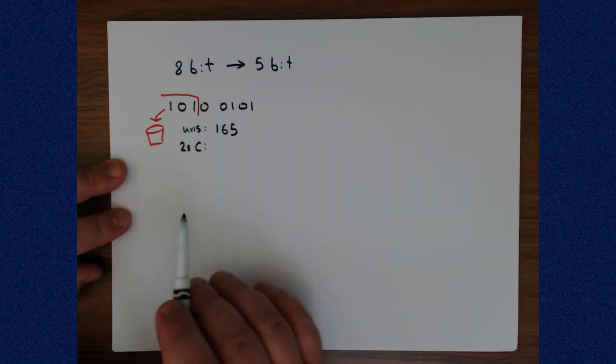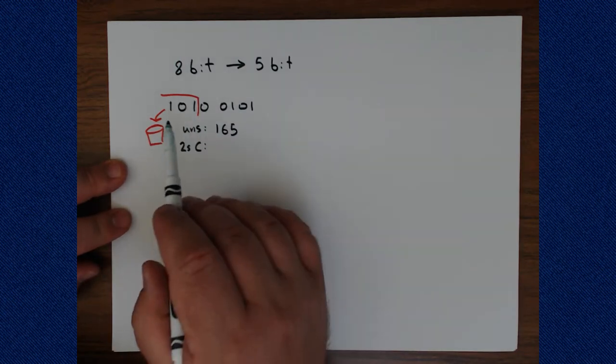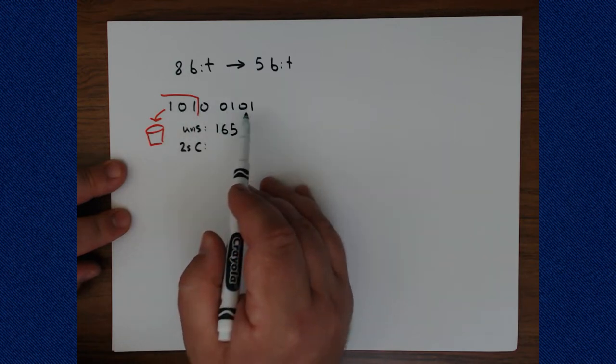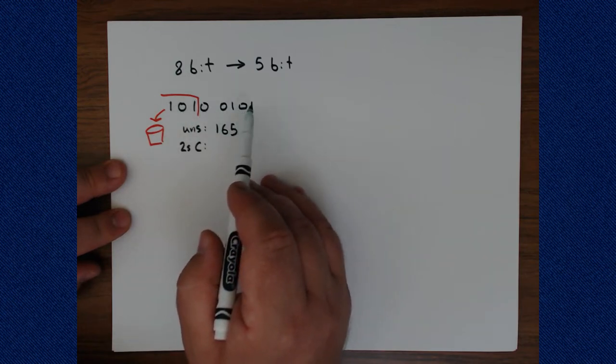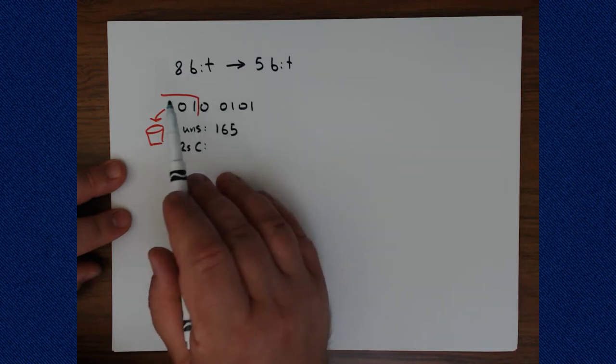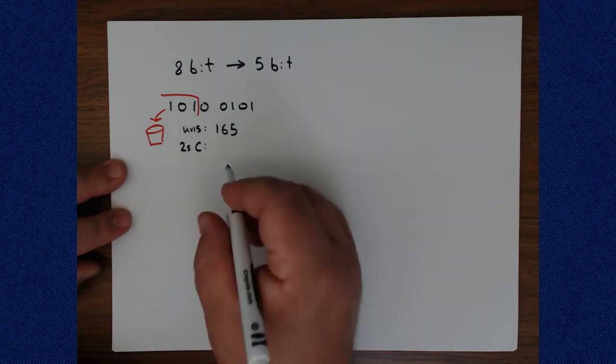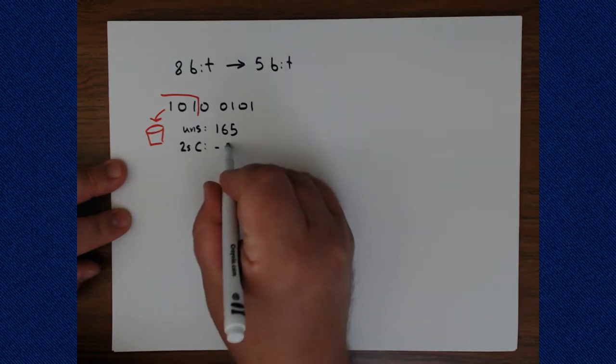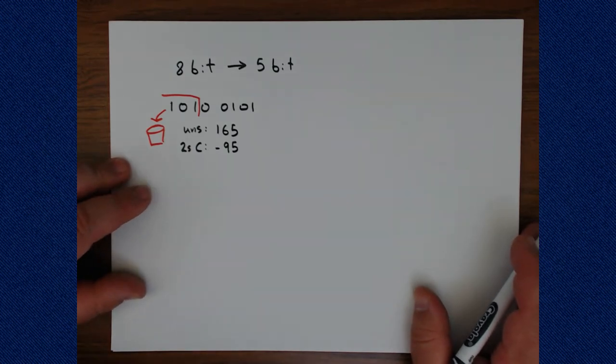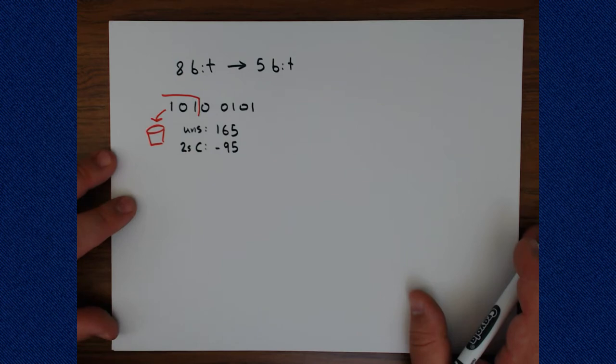And that would be one, one, one, and one. And this would become a zero with a one added. So there would be a one, one, one, one. And that is negative 95, at least as best I can tell. All right, so that was our original bit pattern and its two possible interpretations.